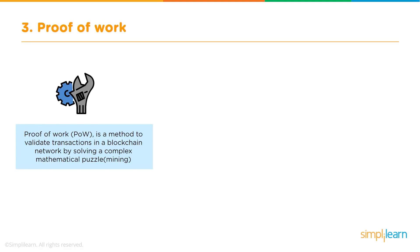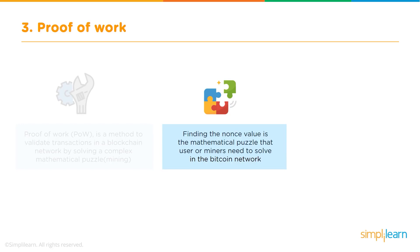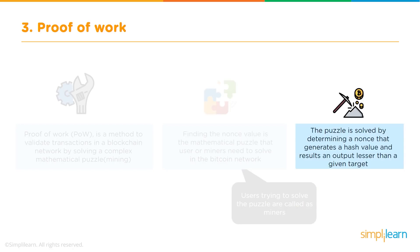Now let's take a look at the proof of work algorithm. Proof of work is a method to validate transactions in a blockchain network by solving a complex mathematical puzzle, and this whole process is called mining. Finding the nonce value is the mathematical puzzle that miners need to solve in the Bitcoin network, requiring huge amounts of computational power and resources. Users trying to solve the puzzle are called miners.